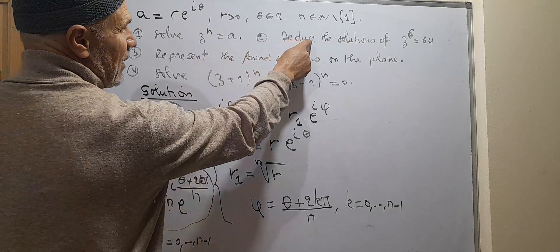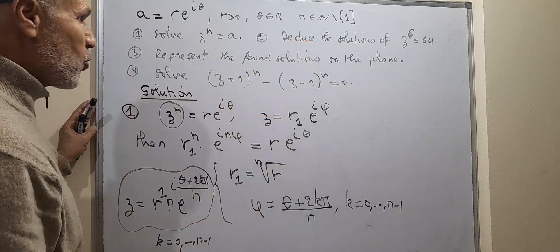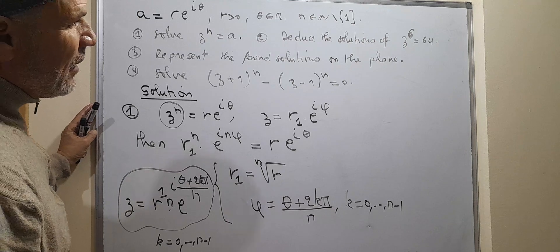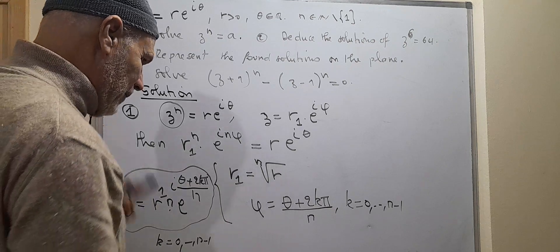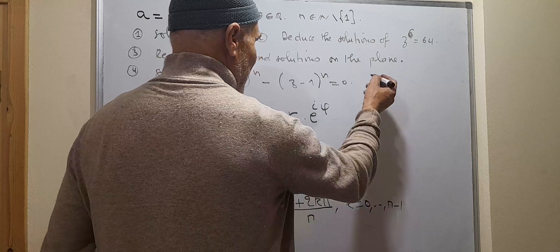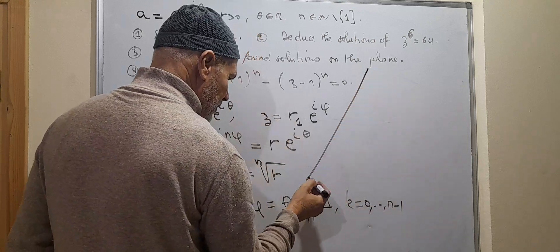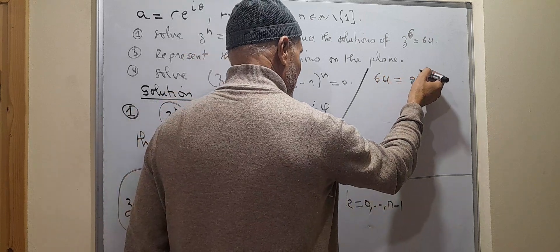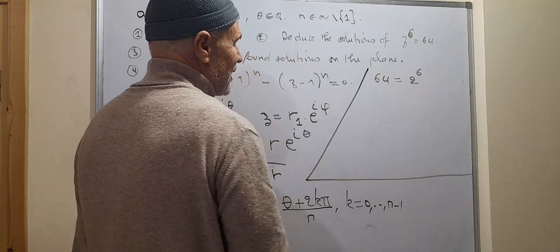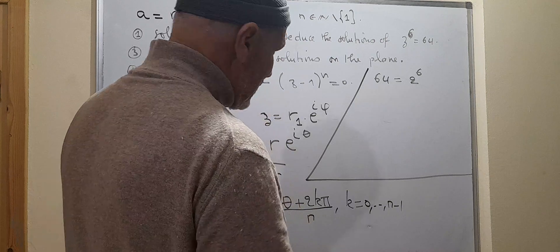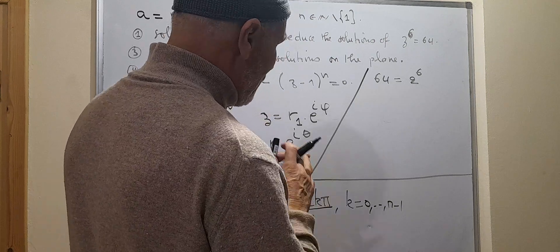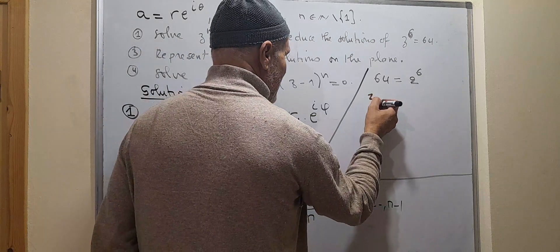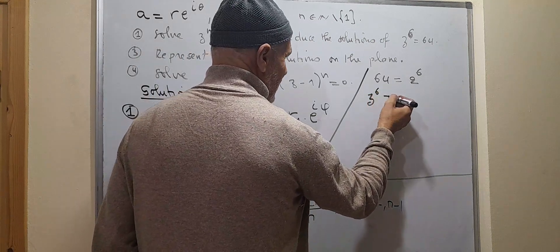The second question: deduce the solutions of z^6 = 64. First, we can remark that 64 = 2^6. This has been set up to fit well with the general equation we just solved.